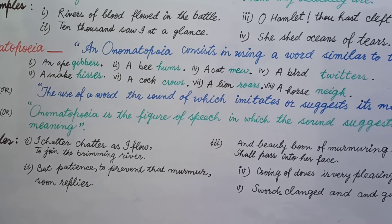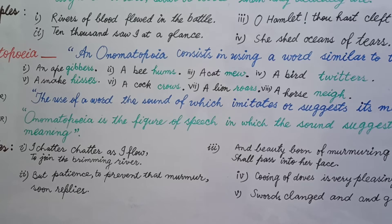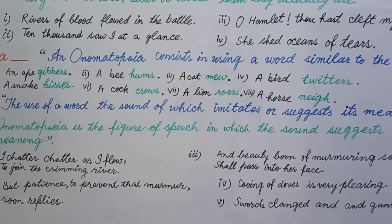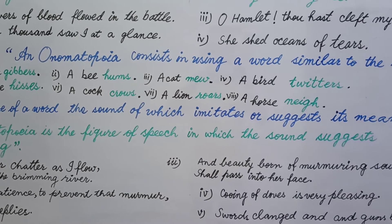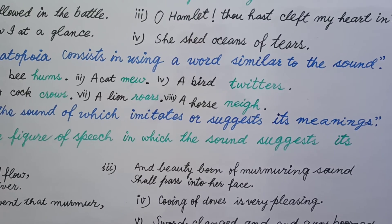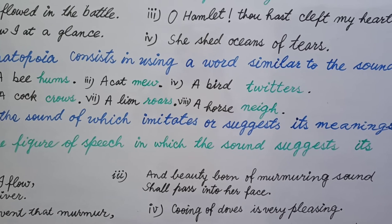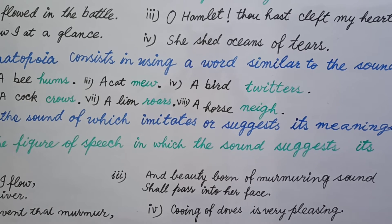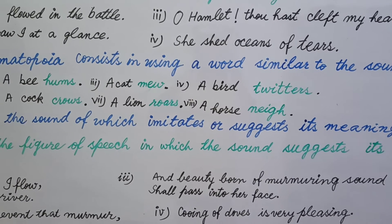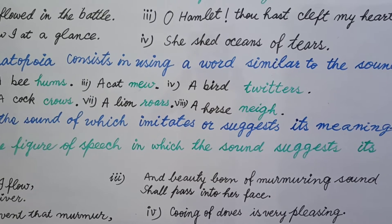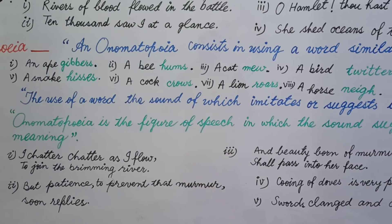The second definition of onomatopoeia: the use of a word the sound of which imitates or suggests its meaning. When we use a word and its sound imitates or suggests the meaning of the thing or animal that creates the sound — suppose if I use 'mew,' that lets us know about the cat; if we use 'twitter,' it makes us know about a bird; if we say 'nay,' it indicates a horse; and the word 'roaring' gives the meaning of lion in one's mind. It means there is onomatopoeia.